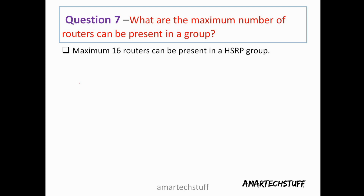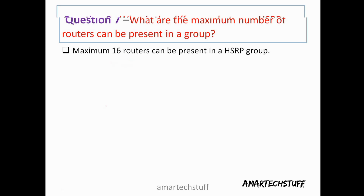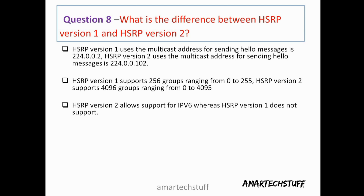Question seven: What is the maximum number of routers that can be present in an HSRP group? In a single HSRP group, we can have up to 16 routers.